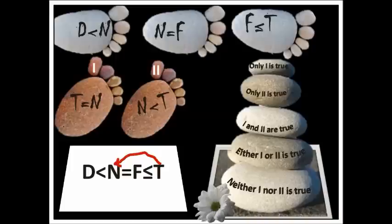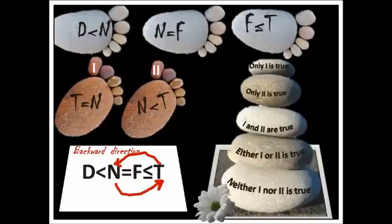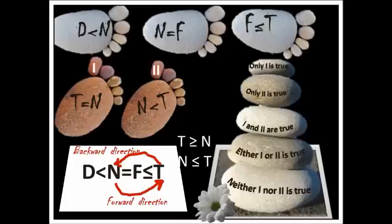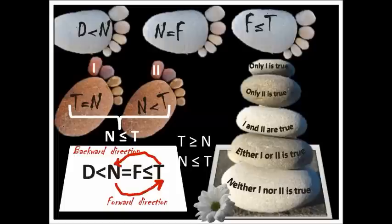Taking the second conclusion, n less than t — forward direction. Comparing n and t: the answer is n less than or equal to t. But conclusion two says just n less than t. Listen carefully: in backward direction, t is greater than or equal to n; in forward direction, n is less than or equal to t. When you combine both conclusions together, you get n less than or equal to t, which is correct both forward and in reverse.